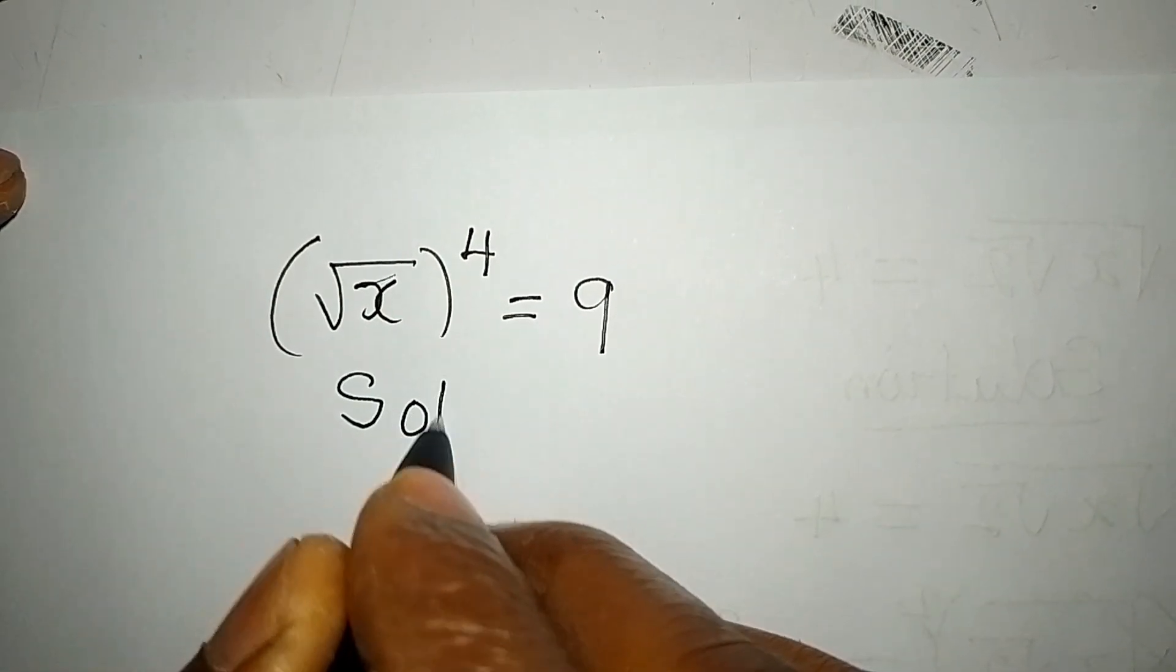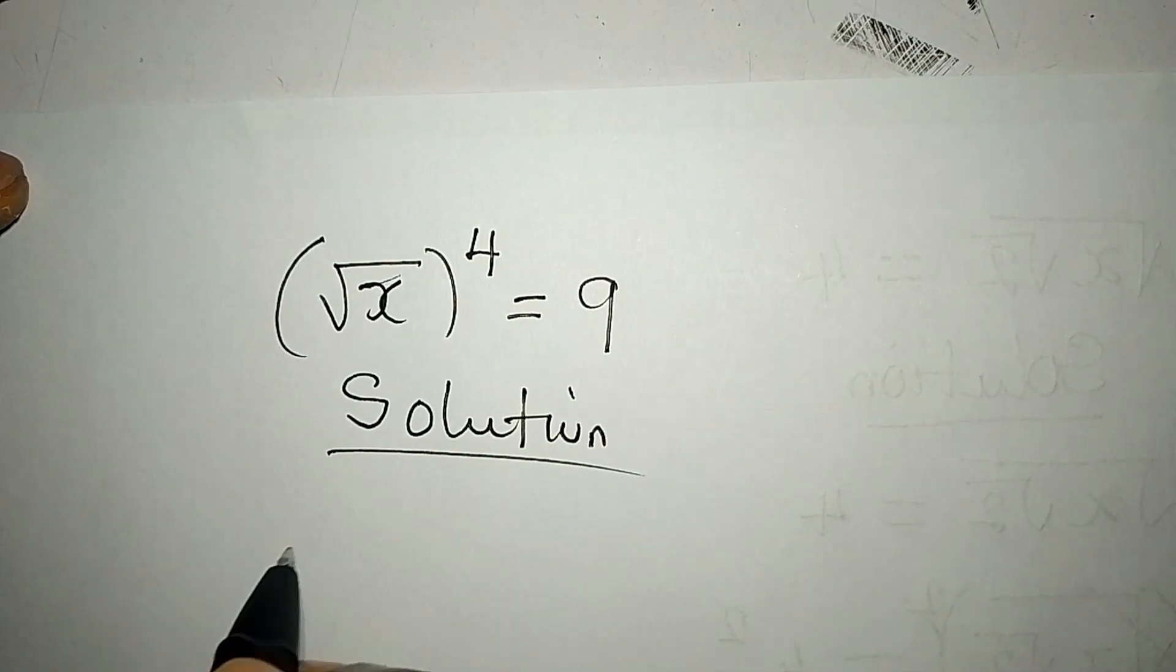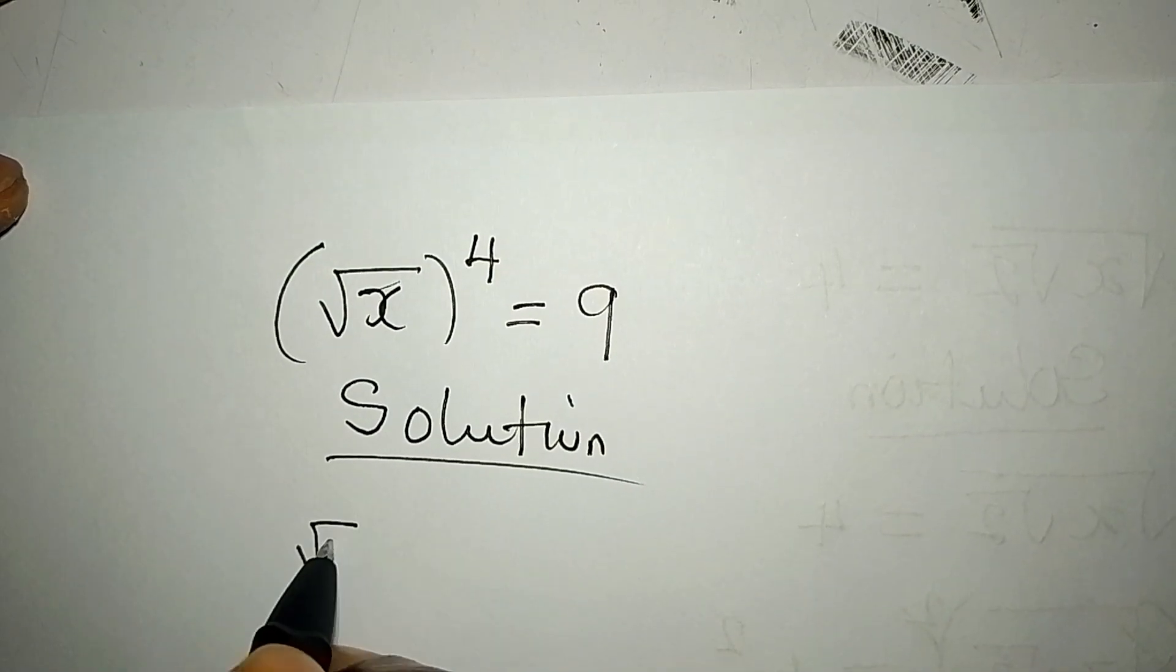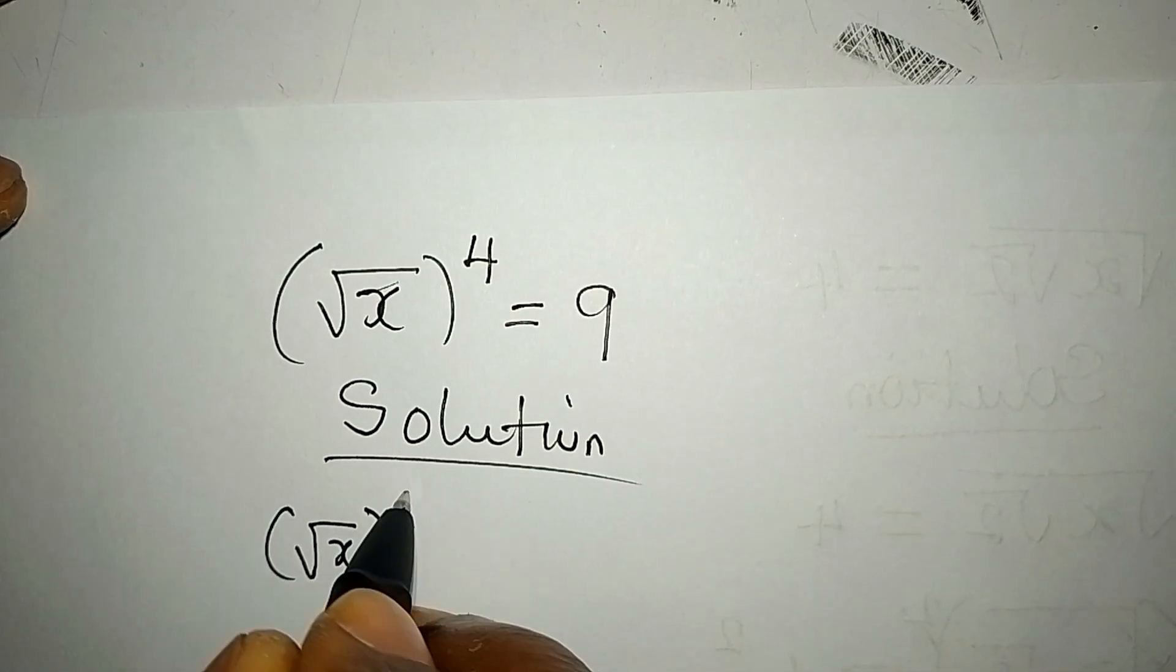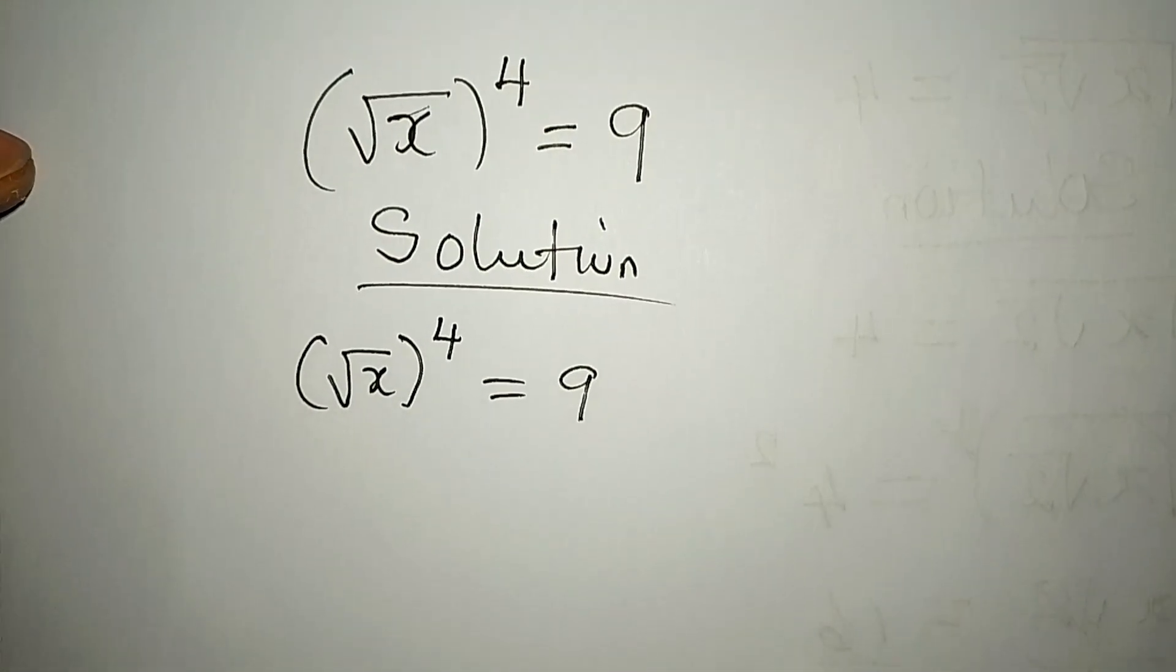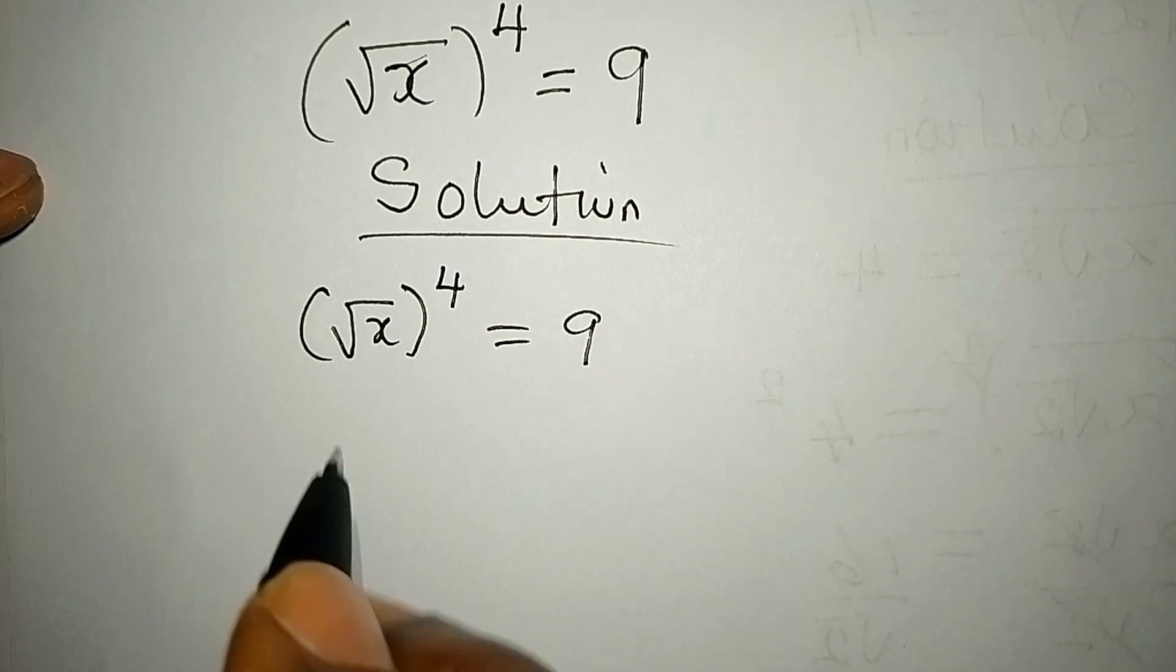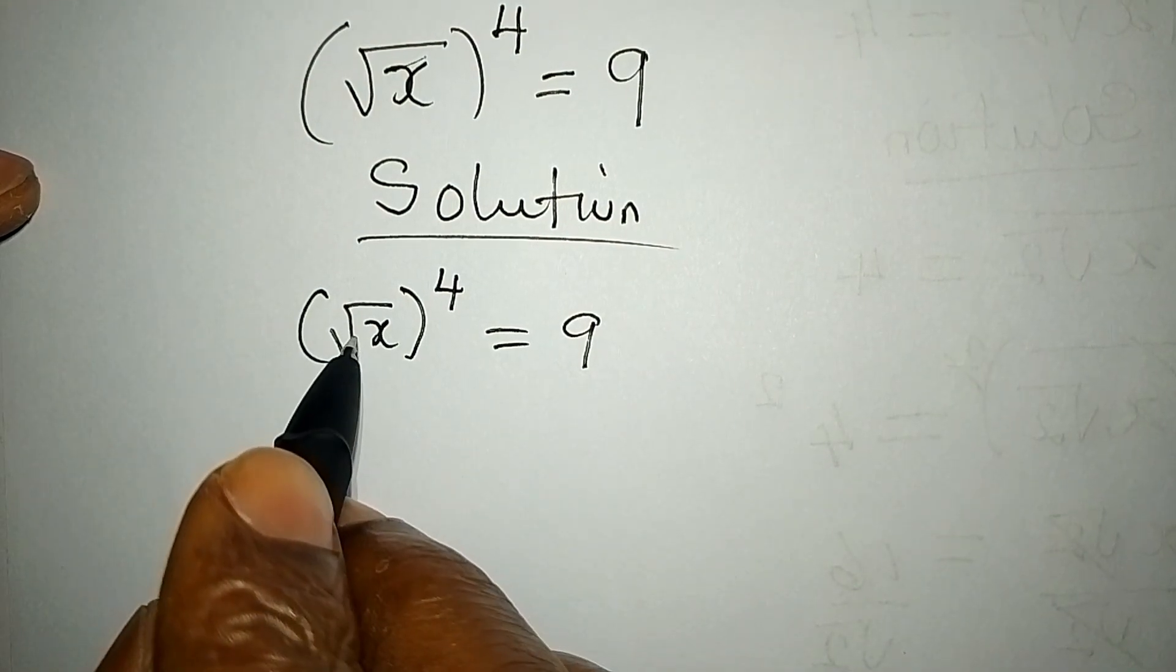Hello everyone, let's deal with this problem very quickly. We have square root of x to the power of four equals nine. How do I deal with this? This is simple because we can equally say square root of x here is the same thing as x to the power of one over two.